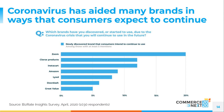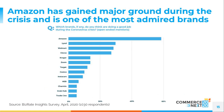From the BizRate survey, we also asked about brands that consumers discovered or started to use during the coronavirus. Some are ones you'd expect: Zoom, Clorox products, Instacart. Amazon is one to point out — lots of stories about them continuing their dominance or even growing their market share. We also asked which brands are doing a really good job during the coronavirus, and Amazon really stands out along with some cleaning products, with other retailers like Walmart, Kroger, and Zoom also appearing.